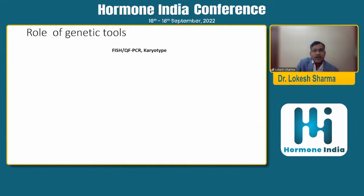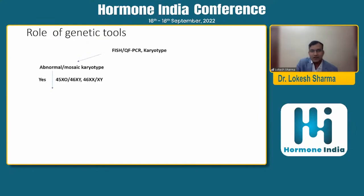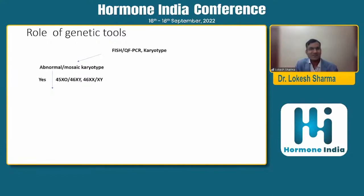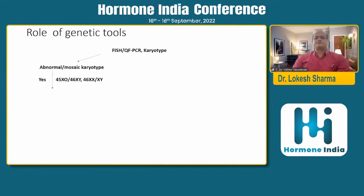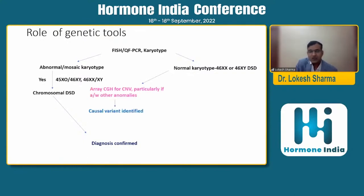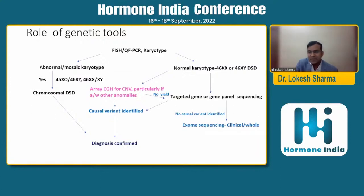Regarding genetic tools: FISH or quantitative fluorescent PCR should be available; if not, a formal karyotype. If an abnormal karyotype is found — such as 45XO/46XY mosaic — it is chromosomal DSD. If karyotype is normal 46XY or 46XX, proceed to chromosomal microarray (CGH array), especially if other defects are present. If that is unrevealing, then targeted gene sequencing, gene panel sequencing, or exome sequencing should be performed depending on available facilities.